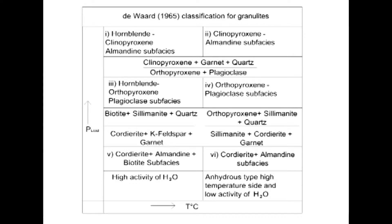The third important assemblage is hornblende, orthopyroxene, plagioclase sub-facies. Fourth is orthopyroxene, plagioclase sub-facies. The fifth important sub-facies is cordierite, almandine, biotite sub-facies. Number sixth is cordierite, almandine sub-facies.